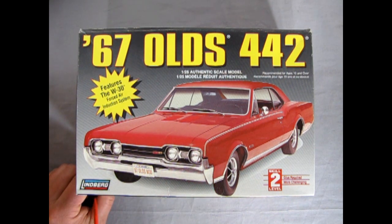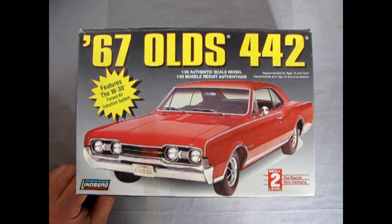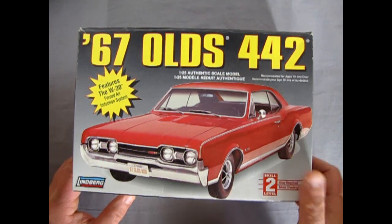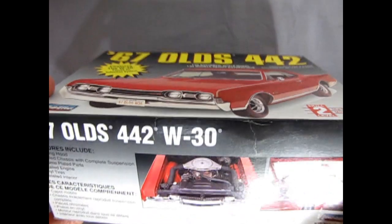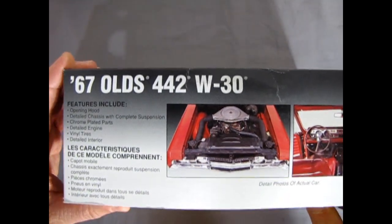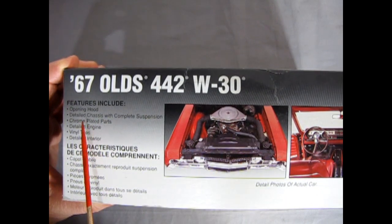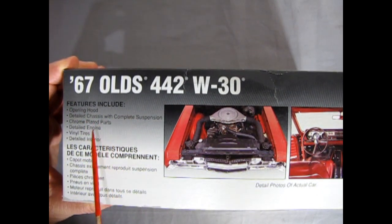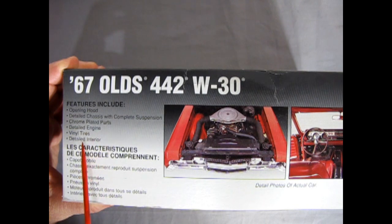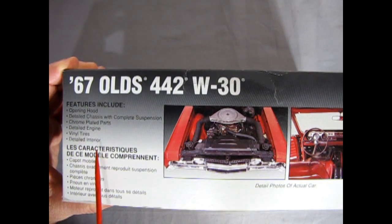The nice part about this is AMT, Monogram, Revell, they were all competing with Tamiya Japan for best detailed kits. And in this time frame, Lindbergh jumped in on the boat and brought us out these great kits as well. Looking at the side of the box here, we have the 67 Olds, opening hood, detailed chassis with complete suspension, chrome plated parts, detailed engine, vinyl tires, and a detailed interior.